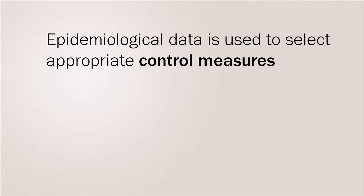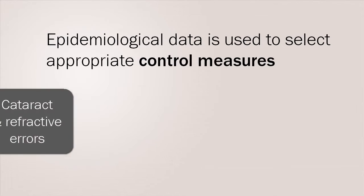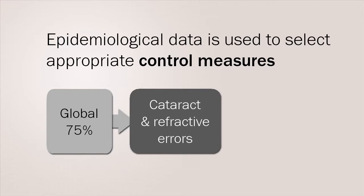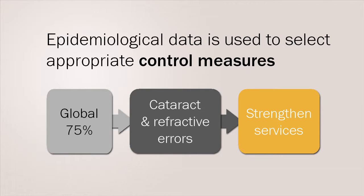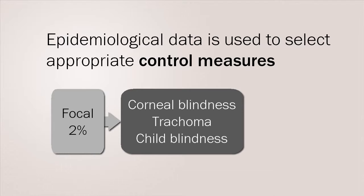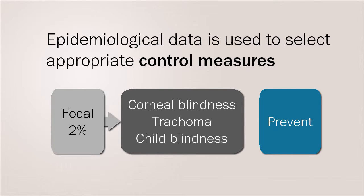Epidemiological data is used to select appropriate control measures for eye disease. Cataract and refractive errors are global diseases causing 75% of all avoidable visual impairment; clear treatment strategies can be implemented at the local level, alongside practical measures to strengthen eye care services and ensure access for all. Corneal blindness, trachoma and childhood blindness are considered focal diseases because they affect vulnerable high-risk groups. There are methods to treat and, more importantly, to prevent many of these conditions — the challenge is to find the cases and implement services locally.